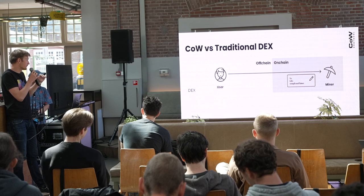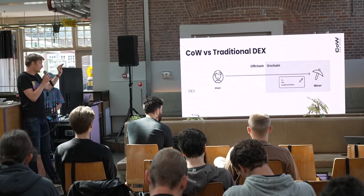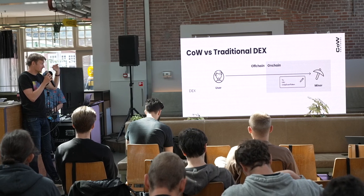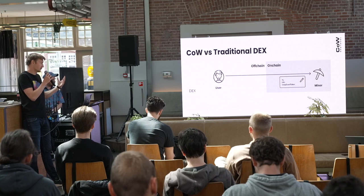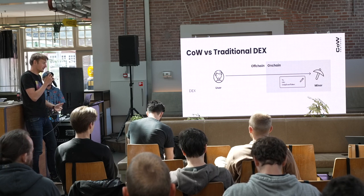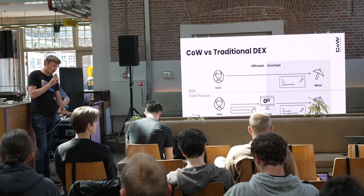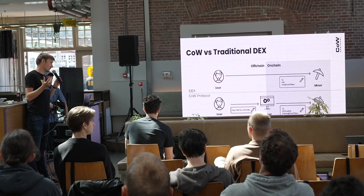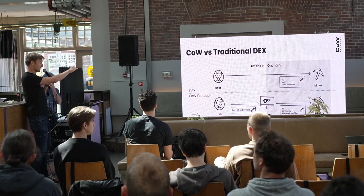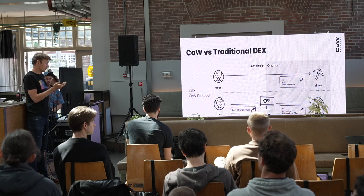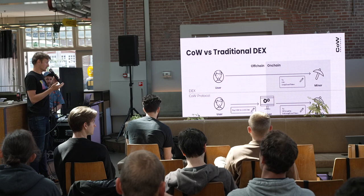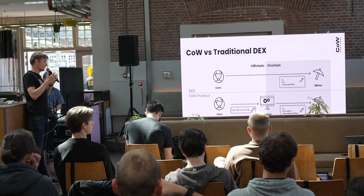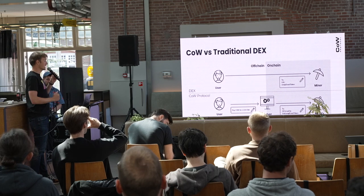From an architecture perspective, the difference between Cow and a traditional DEX is that traditional DEX users submit trades as a raw Ethereum transaction directly on-chain to the miner. They're putting the faith of their trade being executed honestly into the hands of the miner, and as we know from MEV, that is most likely not the case. In CowProtocol, instead we sign an off-chain message handed over to the CowProtocol order book, where it will be aggregated by a solver, and then one Ethereum transaction settles all the orders in the current batch.